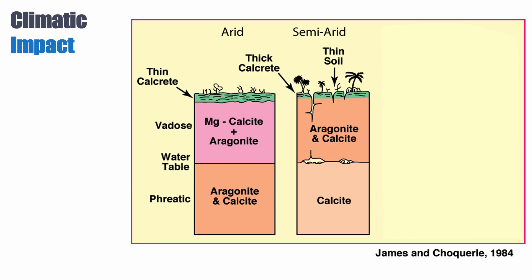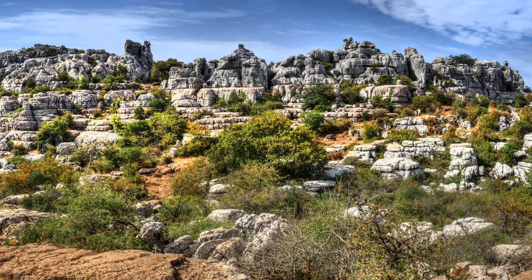Now if you're in a semi-arid environment, the calcrete — the zone of evaporation and precipitation of minerals — is much thicker. Notice that in the vadose zone, because we have more water, we now have aragonite and calcite preserved, but magnesium calcite is gone. Whereas in the phreatic zone, we only have calcite, and at the interface between the two, we're starting to have cave formation. An example would be southern Europe — Italy or Spain — where we have the beginning of what is known as a karst landscape, but we still preserve some of the limestones.